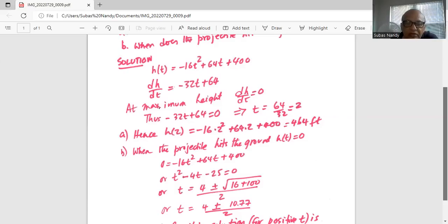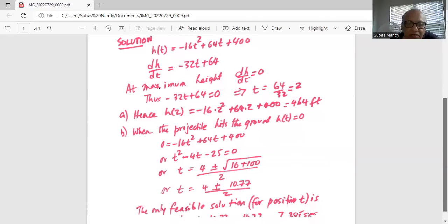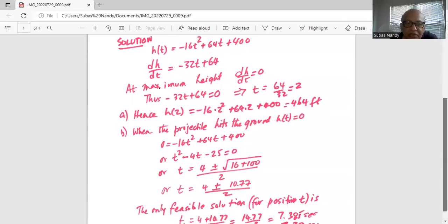So the solution for t is minus b, which is minus minus 4, which is positive 4, plus minus b squared, which is 16, minus 4ac. So minus 4 times minus 25, a is 1, remember, so minus 4 times minus 25 is positive 100. So t equals 4 plus minus 10.77 divided by 2.